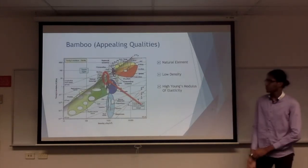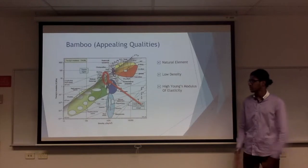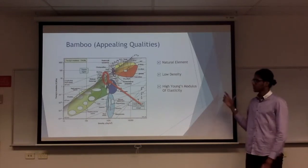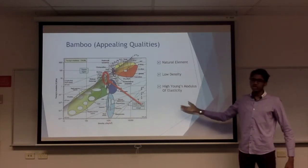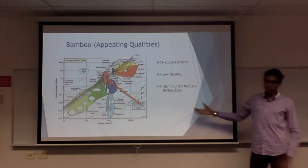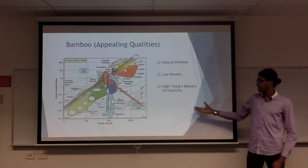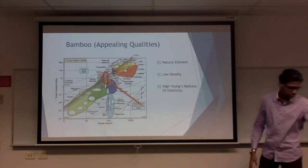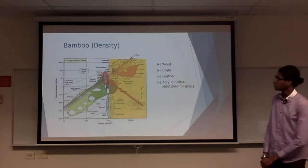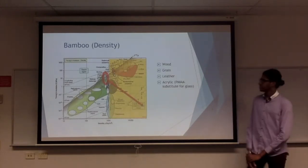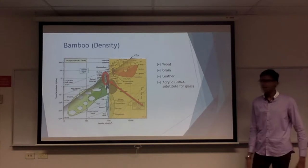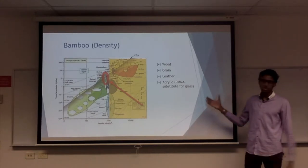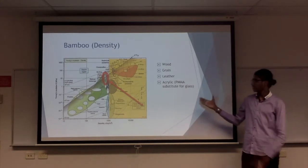Bamboo has a variety of appealing qualities referred to in the Young's modulus of elasticity. As you can see here, it is amongst one of the highest in natural elements. It also has one of the lowest densities and a high modulus of elasticity. This table depicts bamboo's density in comparison with counterparts and natural elements such as wood, grain, leather, and acrylic.